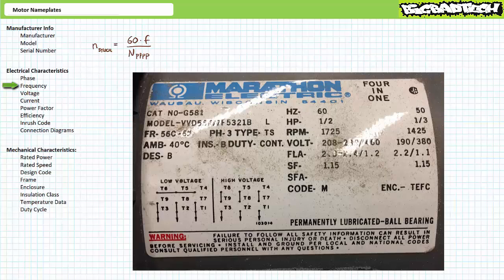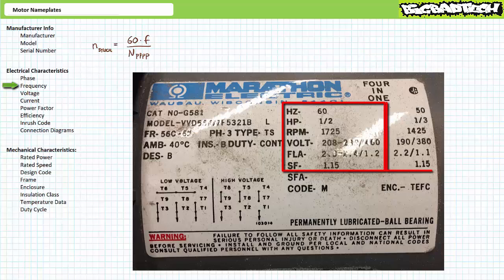Here's an example of one such motor. This nameplate has a column specifying properties at 60 Hz and again at 50 Hz. As one might expect, the rotational speed at 60 Hz is faster than when operated at 50 Hz.